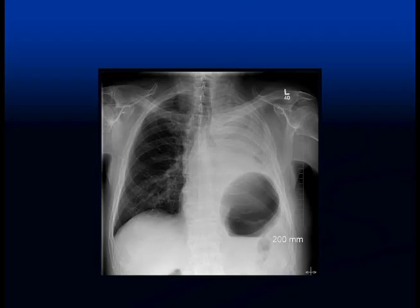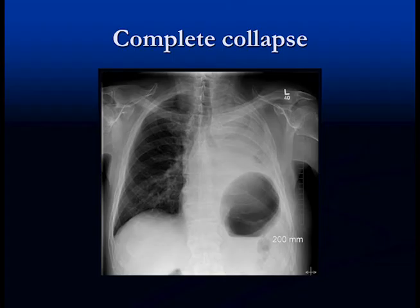Here we've got consolidation involving all that we can see of the left lung, along with evidence of volume loss — tracheal shift and the diaphragm shifted up. This is a complete collapse of the left lung. The main stem bronchus is amputated centrally — it's occluded — and that's what has caused the complete collapse of the left lung.